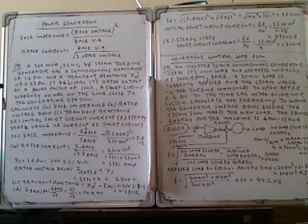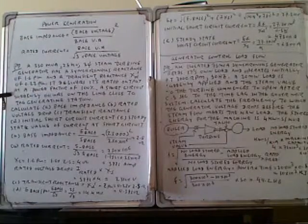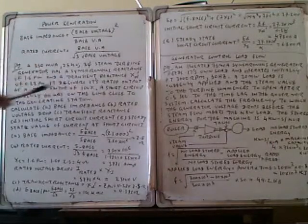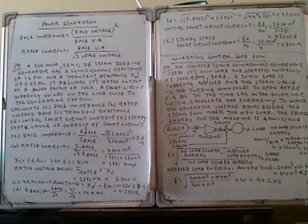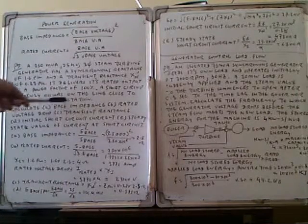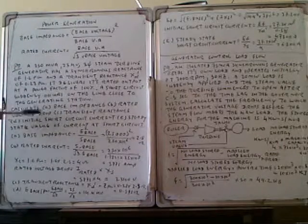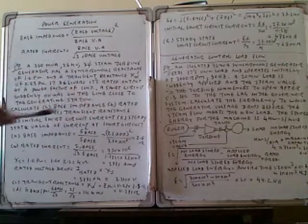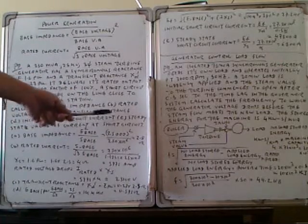The generator delivers its rated output at 100 percent power factor. A short circuit is suddenly applied on the line close to the generating station. We need to calculate: the base impedance, rated voltage drop, transient reactance, initial short circuit current, and steady-state short circuit current.